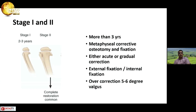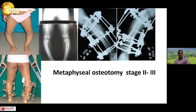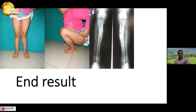For stages 1 and 2 in children more than 3 years of age, it is a metaphyseal corrective osteotomy and fixation, either with acute or gradual correction, external or internal fixation. We prefer to over-correct to 5 to 6 degrees of valgus. This is for a patient with stage 2 on one side and stage 3 on the other — metaphyseal osteotomy and that is the end result.